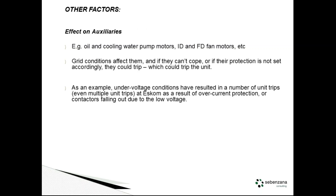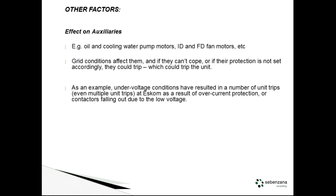One thing I've mentioned already but we mustn't forget: the auxiliaries are also connected to the grid. Any issues with the grid have to be handled by the auxiliaries. If they fail, the machine goes out. There have been a number of trips in Eskom where under-voltage conditions caused over-current protection to come in, contactors fell out, machines were lost, and they had multiple unit trips as a result.